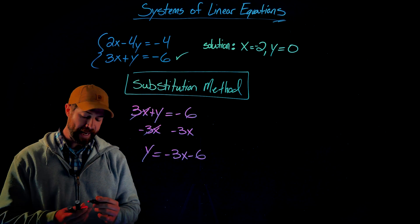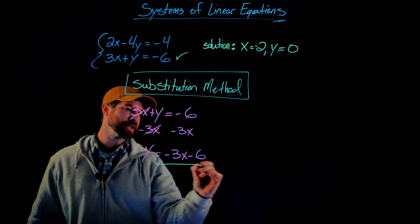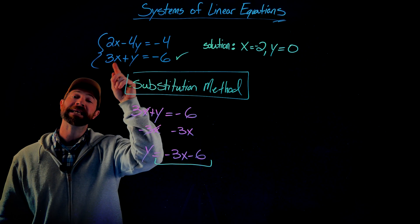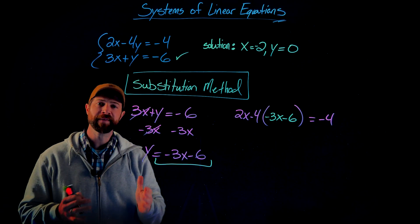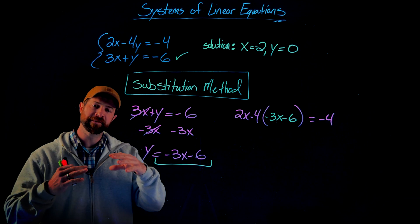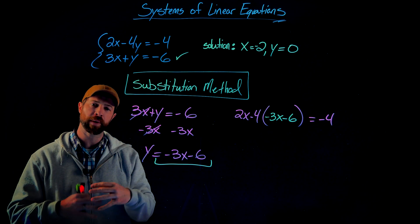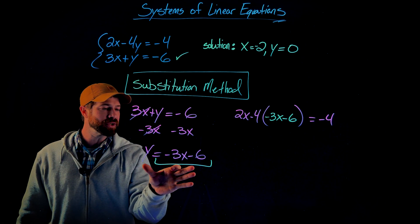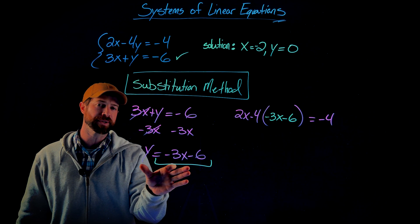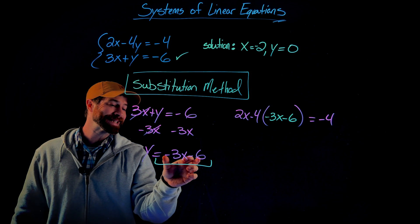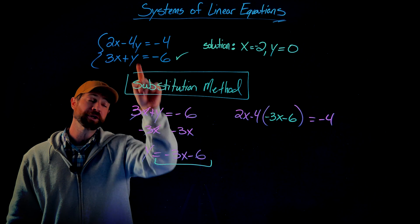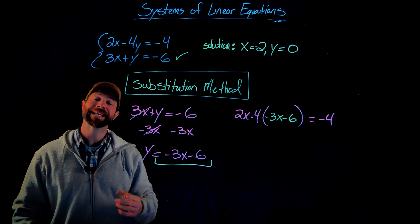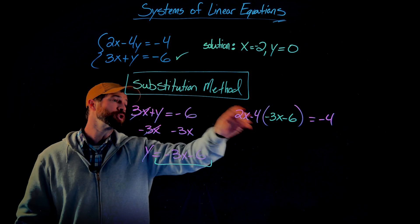What I'm going to do now is substitute this expression, negative 3x minus 6, in for y in the other equation. All of the algebraic methods for solving systems of equations are ways of putting the information from both equations together. In this case, I'm getting an expression that's equal to y. This still is an equation that has an infinite number of solutions, but the second I inject negative 3x minus 6 in for y into the first equation, I now have a one-variable linear equation that I can easily solve for.